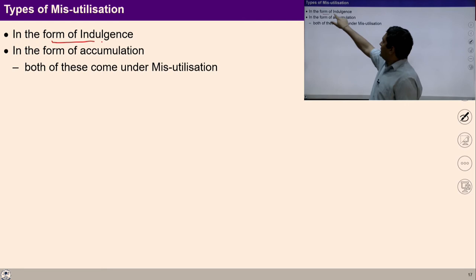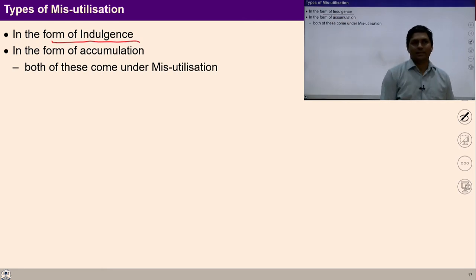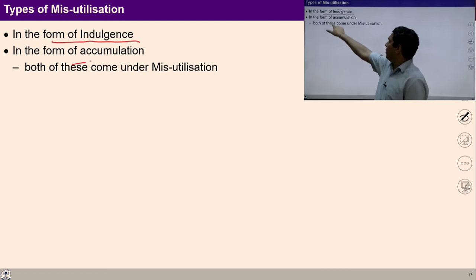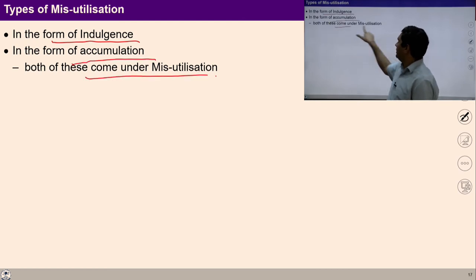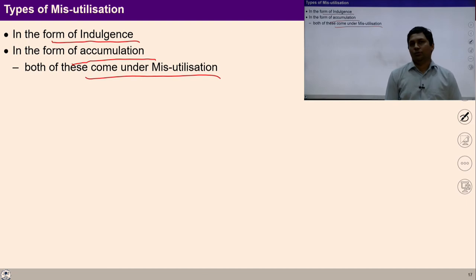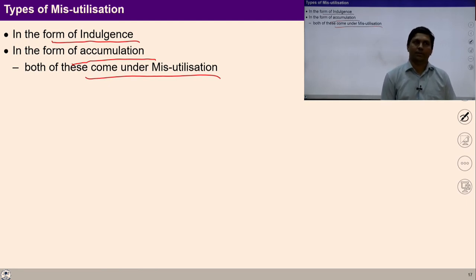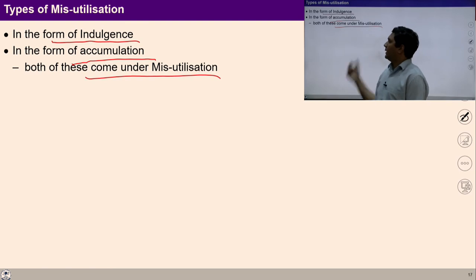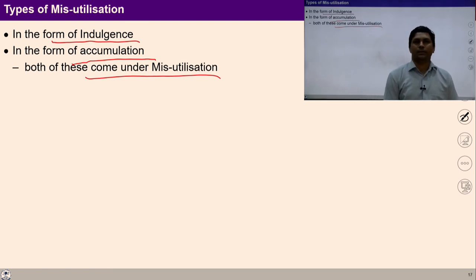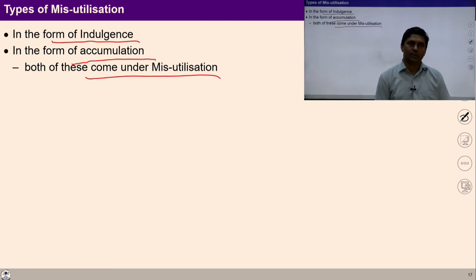Mis-utilization in the form of indulgence and mis-utilization in the form of accumulation — both come under mis-utilization. Some people are indulged to get happiness from sensation; some people are trying to accumulate things to get attention and respect from others. Both of these come under mis-utilization.